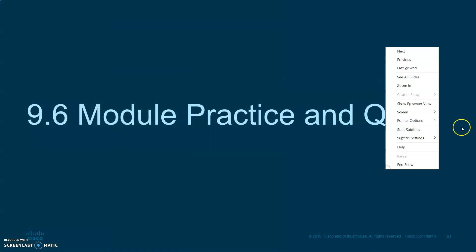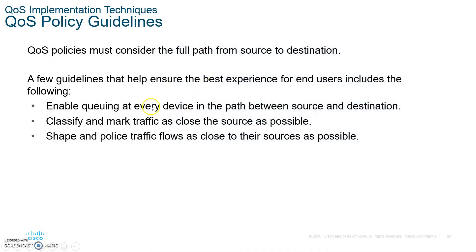Before you finish, please write down these three QoS guidelines: Enable queuing at every device in the path between the source and the destination. Classify and mark traffic as close as possible to the source. Shape and police traffic flows as close to their source as possible. If you remember those, the actual configuration beyond the scope of this course is not a big deal — there are plenty of resources online, and if you get into the CCNP, you'll be able to do that. This is it for quality of service — please write up all the notes and submit them. See you on the next module. Thank you.